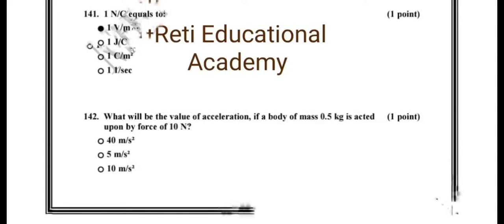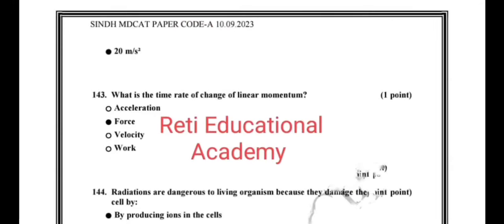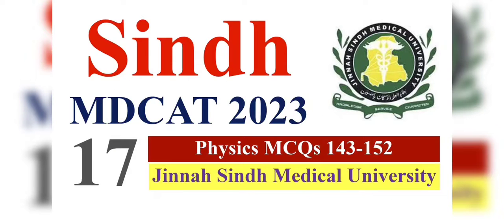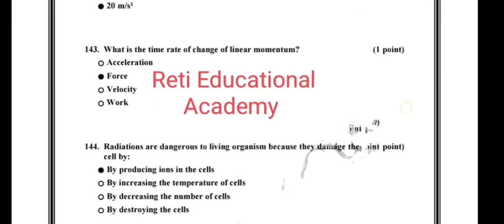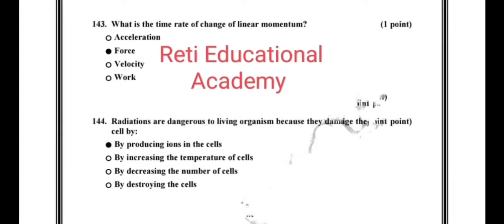Question number 142: what will be the value of acceleration if a body of mass 0.5 kg is acted upon by a force of 10 Newton? The correct option is 20 meters per second squared. Question number 143: what is the time rate of change of linear momentum? The correct option is force.